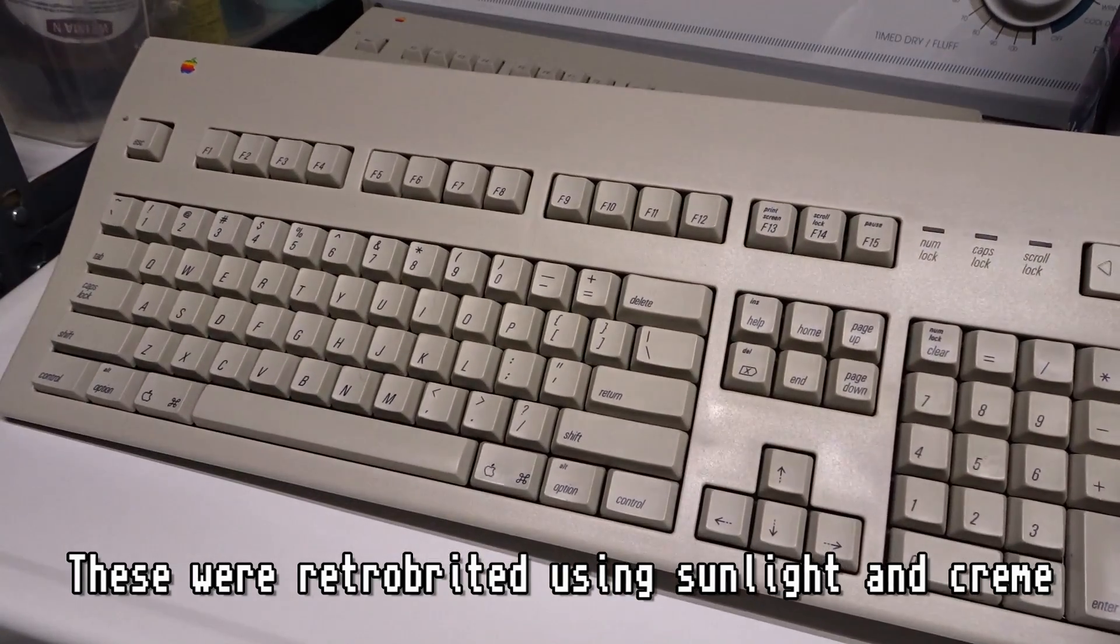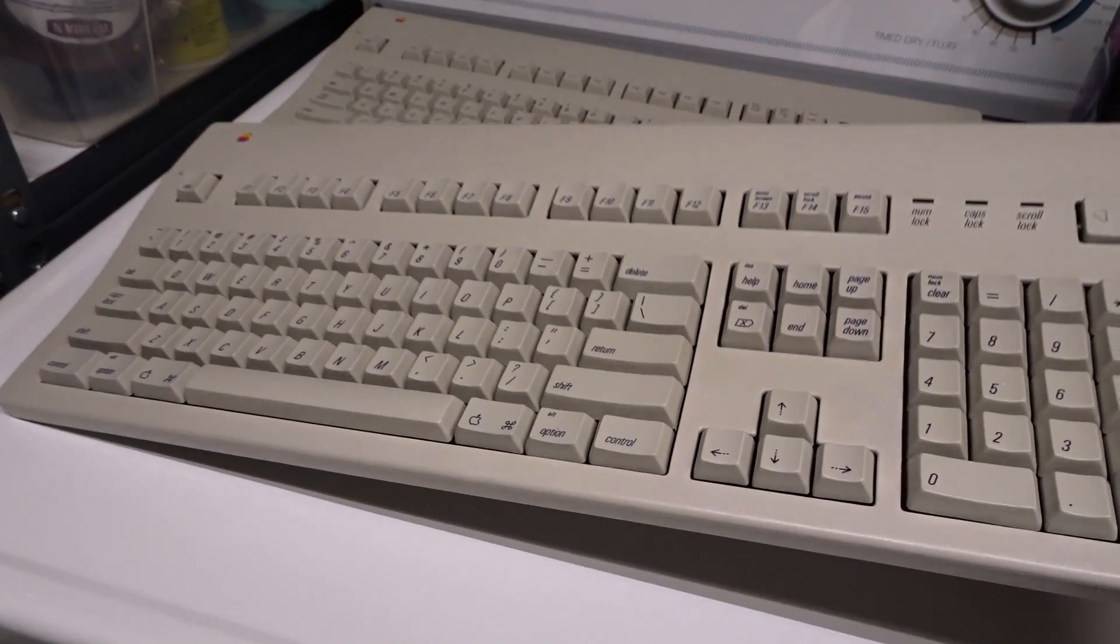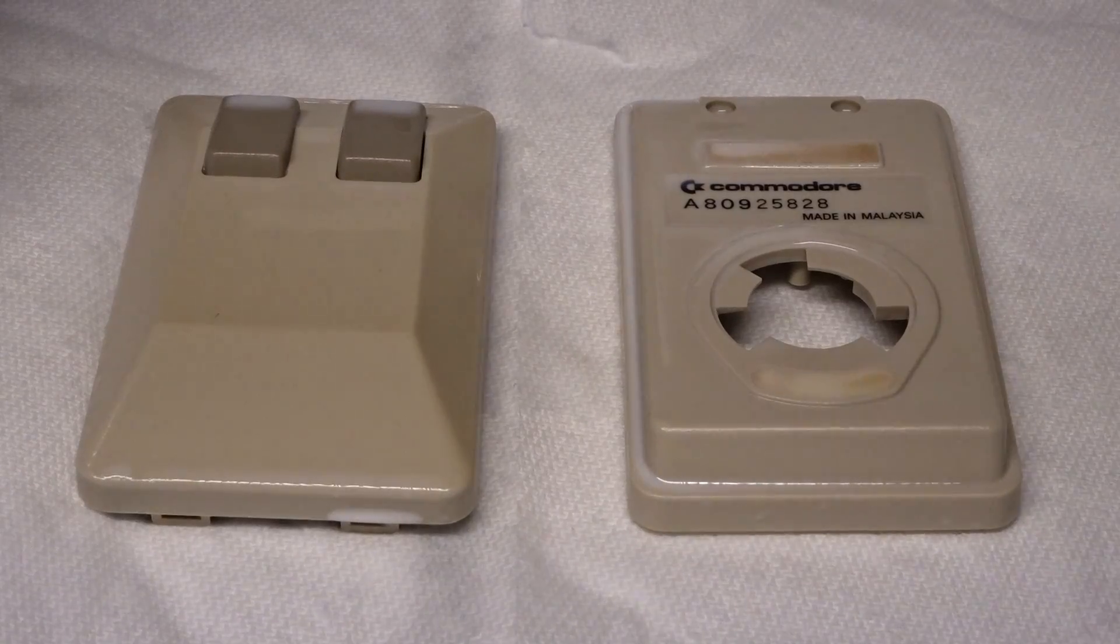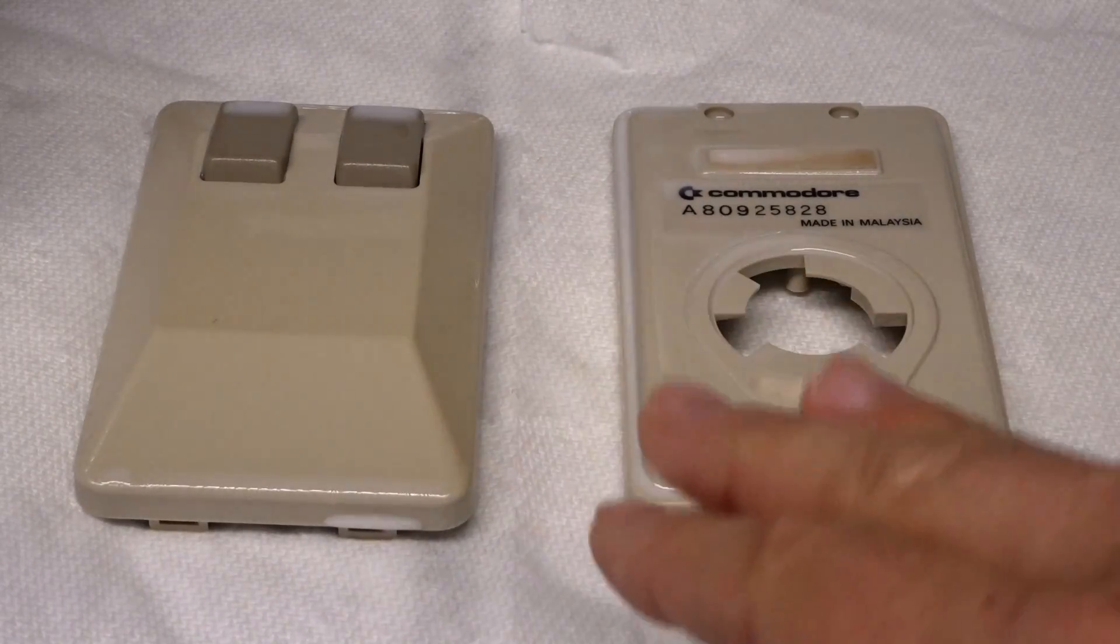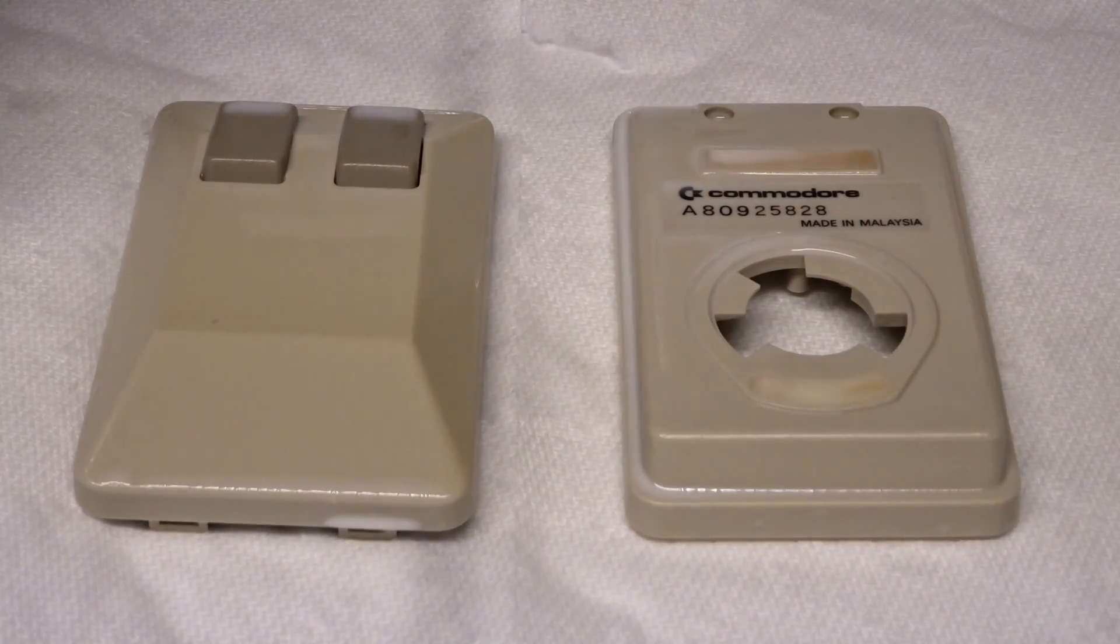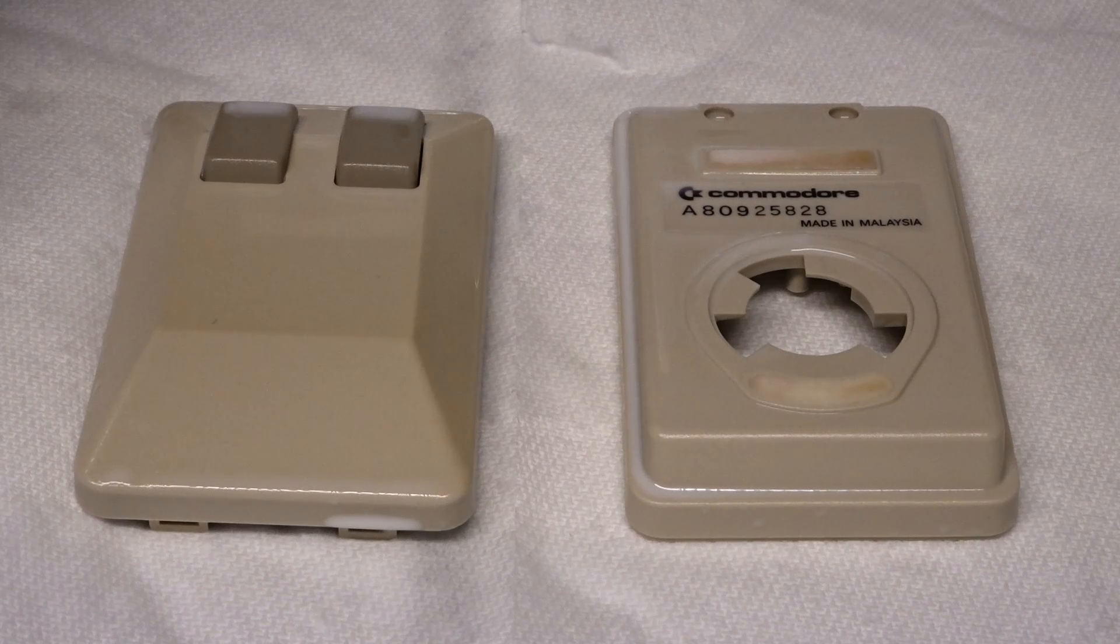What I do is when I clean these I retrobrited the case and the keyboard and then I applied 303 very liberally to everything including the PBT keys. So I hope that keeps these keyboards nice and fresh looking for the rest of their lives, or at least a long time. I'll just let this sit for a while, maybe 20-30 minutes, and then I'll use a rag to wipe it and buff it down and then I'll reassemble the mouse and we'll take a look.